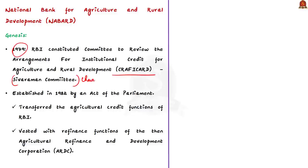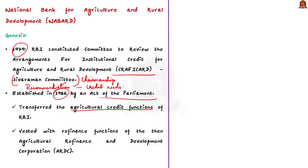This committee was formed in 1979 under the chairmanship of Shri B. Sivaraman. It recommended formation of a unique development financial institution designed to address the credit needs of rural farmers and others. On those lines, the National Bank for Agriculture and Rural Development — shortly known as NABARD — was established in 1982 by an act of Parliament. NABARD came into existence by transferring the agricultural credit functions of the Reserve Bank of India. It was set up with an initial capital of just ₹100 crore, but its paid-up capital was around ₹14,000 crore as on March 31st, 2020.